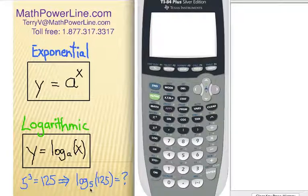In other words, 5 to the what power is 125. Now, we know the answer should be 3 because that's what that is right there. So, on my calculator, how do you do that?